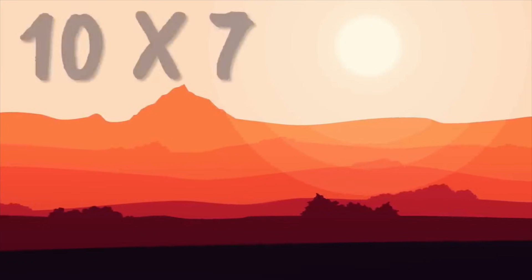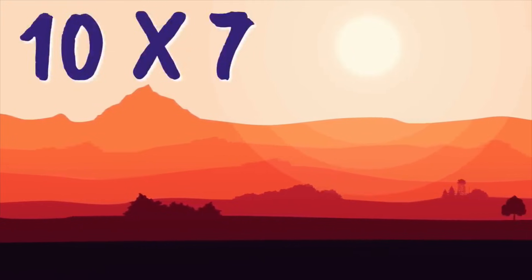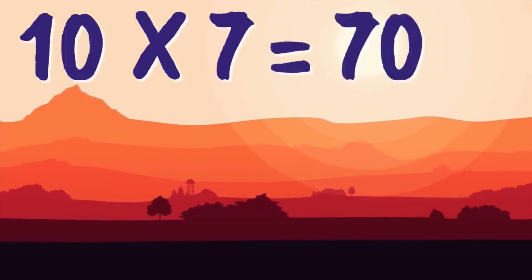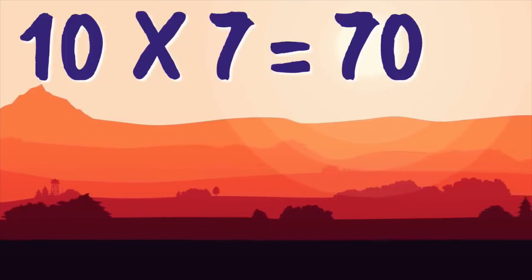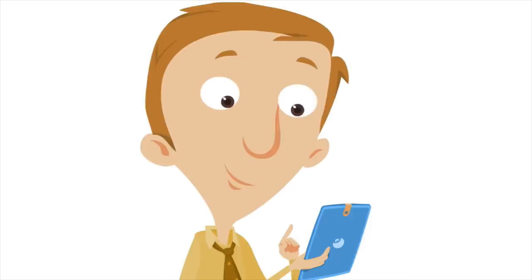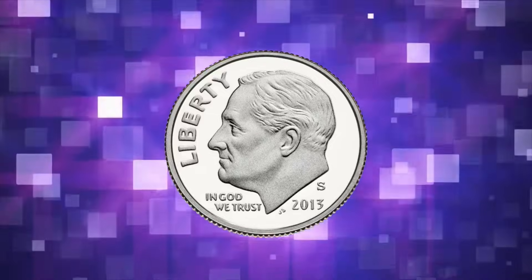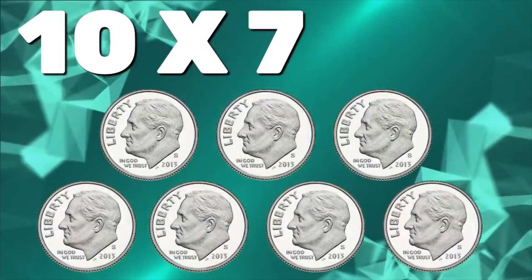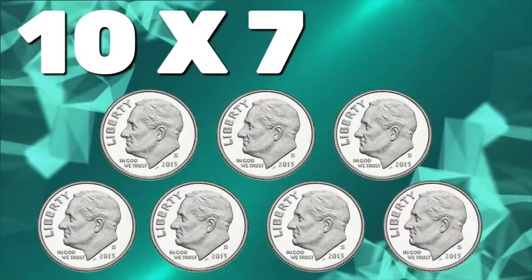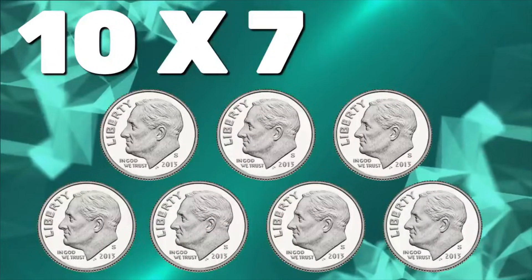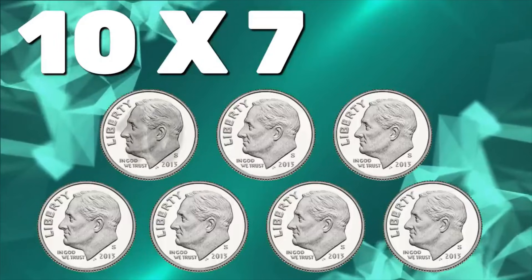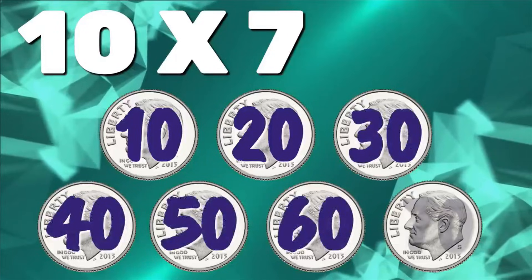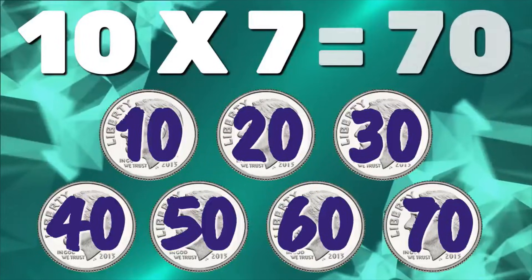Here's the last one: what is ten times seven? Seventy. Ten times seven equals seventy. This can be illustrated using dimes, because dimes are worth ten cents. Ten times seven means the number ten seven times — each dime is worth ten cents, and there are seven of them here. To check our answer, we can count by tens: ten, twenty, thirty, forty, fifty, sixty, seventy. Ten times seven equals seventy.